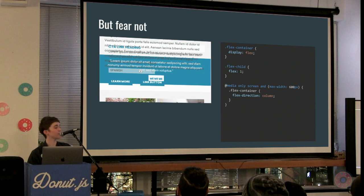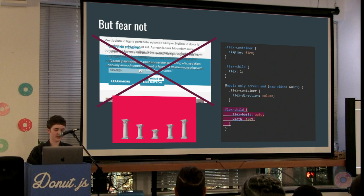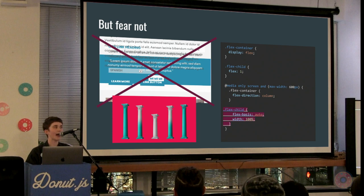Luckily, the fix here is not too hard. All you need to do is at that breakpoint — in this case — set flex-basis to auto and the width to 100% on the child. And that gets these totally happy and harmonious columns. It's just that IE doesn't recognize that shorthand.